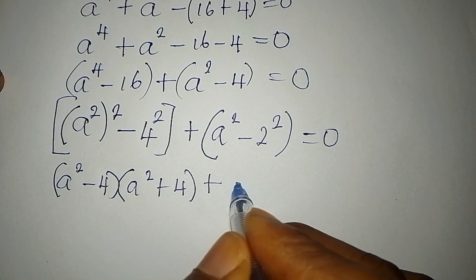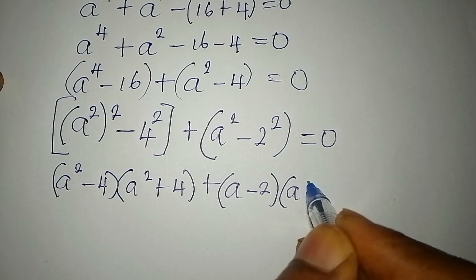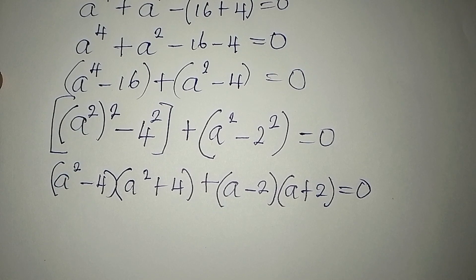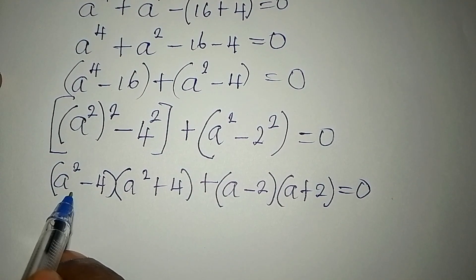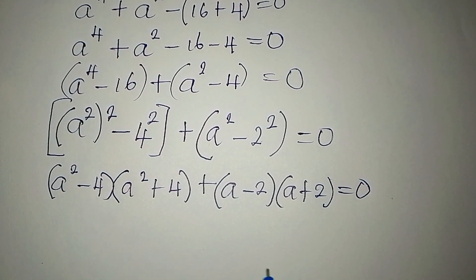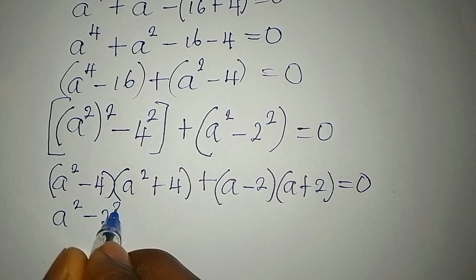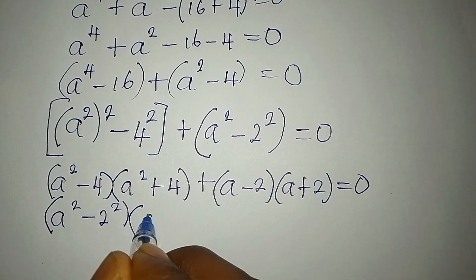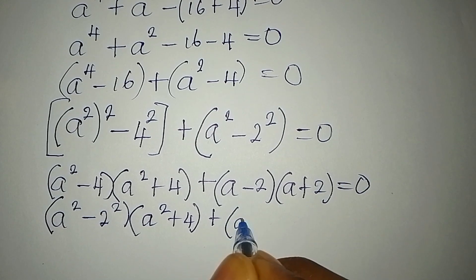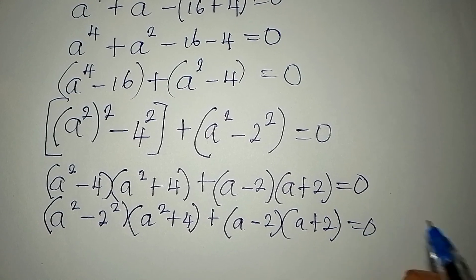I'll apply the same difference of two squares to the second group: A minus 2, into A plus 2, and we equate everything to 0. Then, by looking at this, we can also express A squared minus 2 squared using difference of two squares. So in the second bracket we have A squared plus 4, plus open bracket A minus 2 into A plus 2, equals 0.